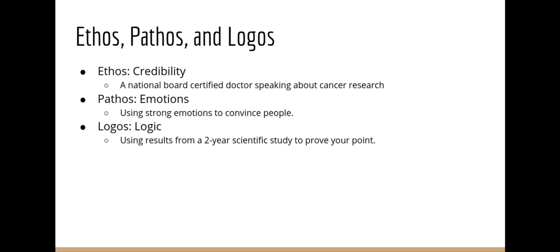Ethos, pathos, logos — you learned this in 10th grade. Ethos is credibility; the author is building credibility, usually in speeches. An example is a National Board Certified doctor speaking about cancer research — they are credible. Pathos is emotion — it is the strongest use of rhetoric when you're trying to convince someone to do something, because it is easy to make people feel things. Logos is logic — using results from a two-year scientific study to prove your point is logos, because you're giving solid facts, numbers, and figures. Often this is used in speeches.